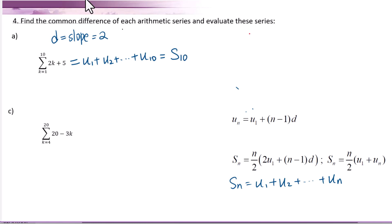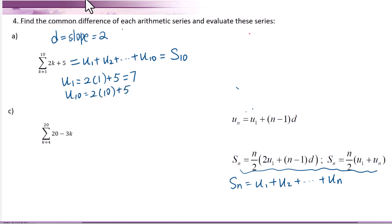We need to figure out the relationship of sigma notation and S sub n so that we can use these two formulas to figure out this series. U sub 1 equals 2 times 1 plus 5 equals 7. U sub 10 equals 2 times 10 plus 5 equals 25. So we will use this formula. Since k is from 1 to 10, we know n equals 10.